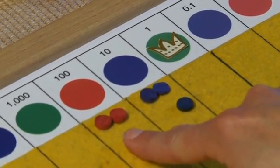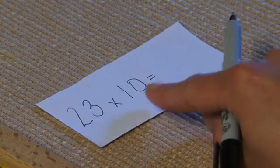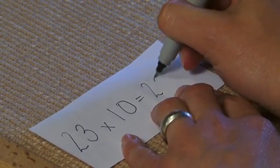That leaves us with 230. We would record our answer. 23 multiplied ten times is 230.